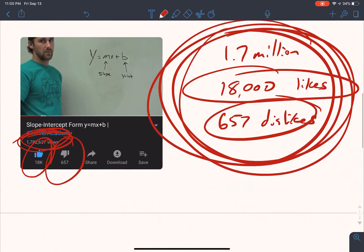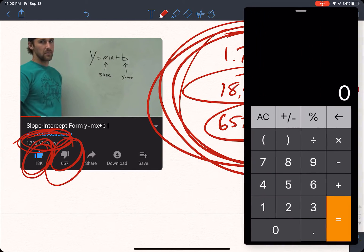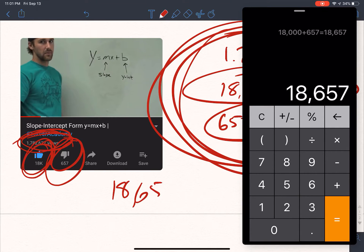So what I could say is, if this is what I'm using as my sample, the people that actually took the time to say, I liked this or I didn't like this, then I could just do some quick math and I could say, well, if I've got 18,000 and I want to add that to my 657, that's my total amount of people that I sampled would be 18,657.